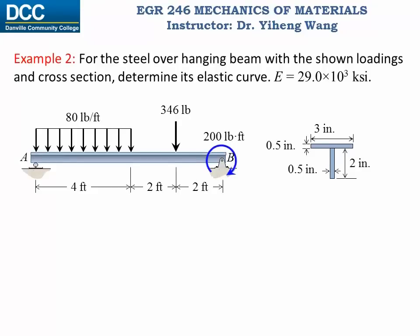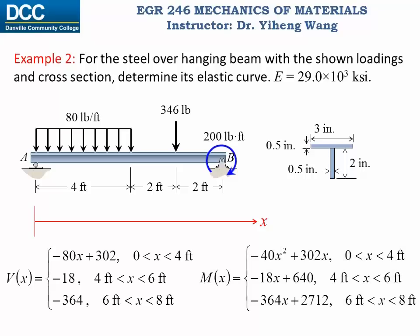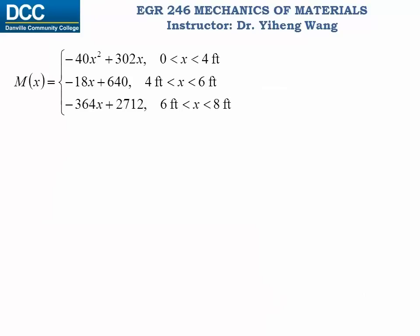Let's look at another example. For this overhanging beam with the shown loadings, cross-section, and given Young's modulus, we need to determine its elastic curve. Since the load situation changes along the beam, the deflection function will be a piecewise function. We have previously determined the internal shear force function and internal bending moment function, both piecewise, as well as the area moment of inertia about the centroidal axis, which is 1.3 in⁴.